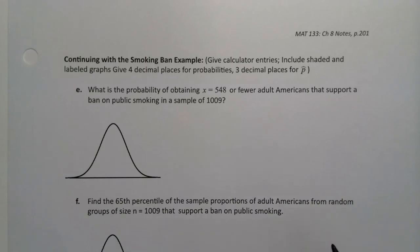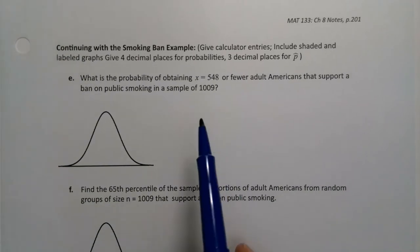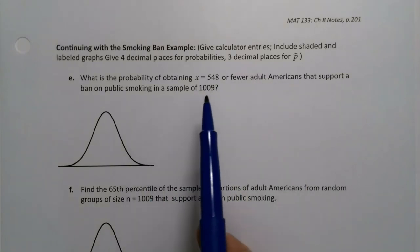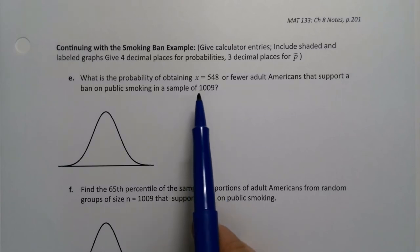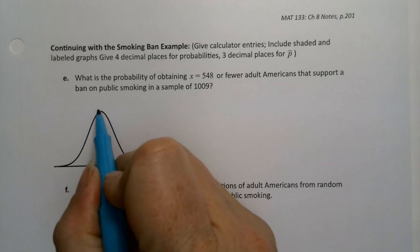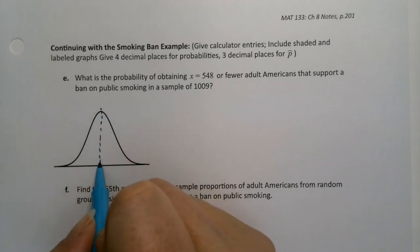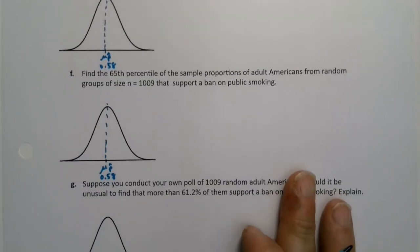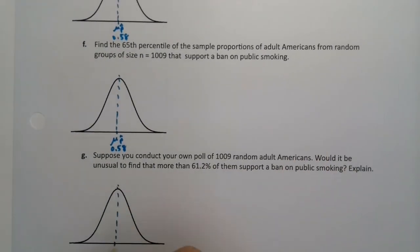Continuing on with our same smoking ban example, we want to know the probability of obtaining X equals 548 or fewer adult Americans that support a ban on public smoking out of a sample of 1009. Remember, for every single graph on this page, we already determined the center back a page ago, and that it was 0.58. Once you establish that for the problem, it's always 0.58 for this entire problem. So I'm drawing it on all three of my graphs here. The mean of the p-hats is 0.58 right there.